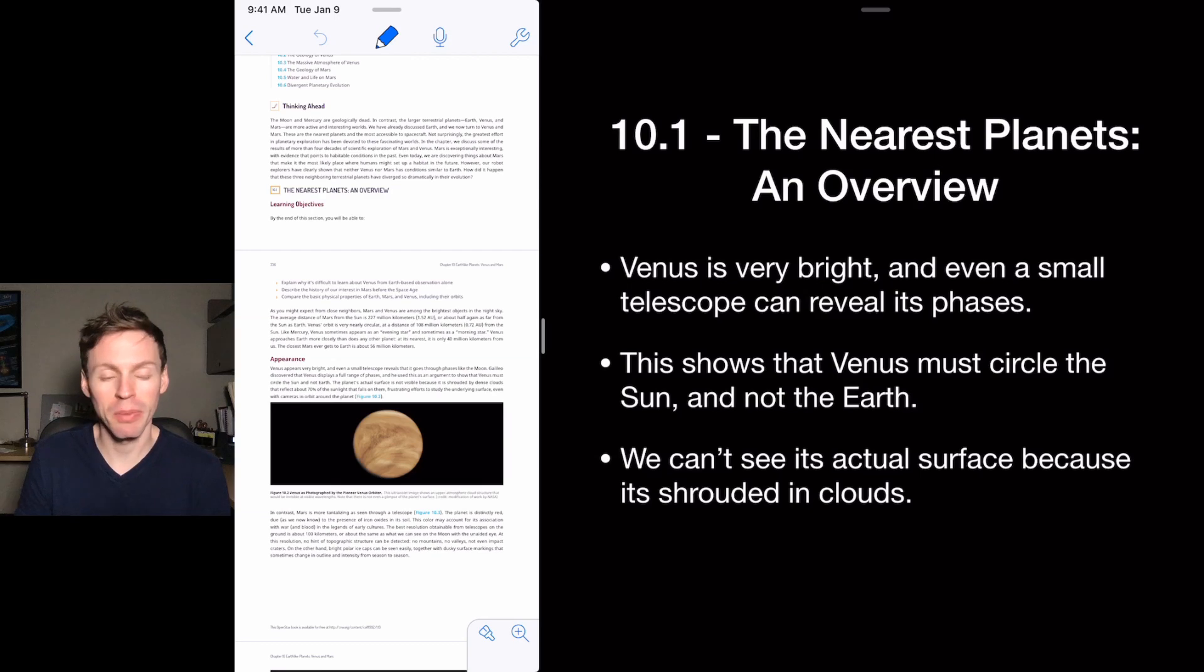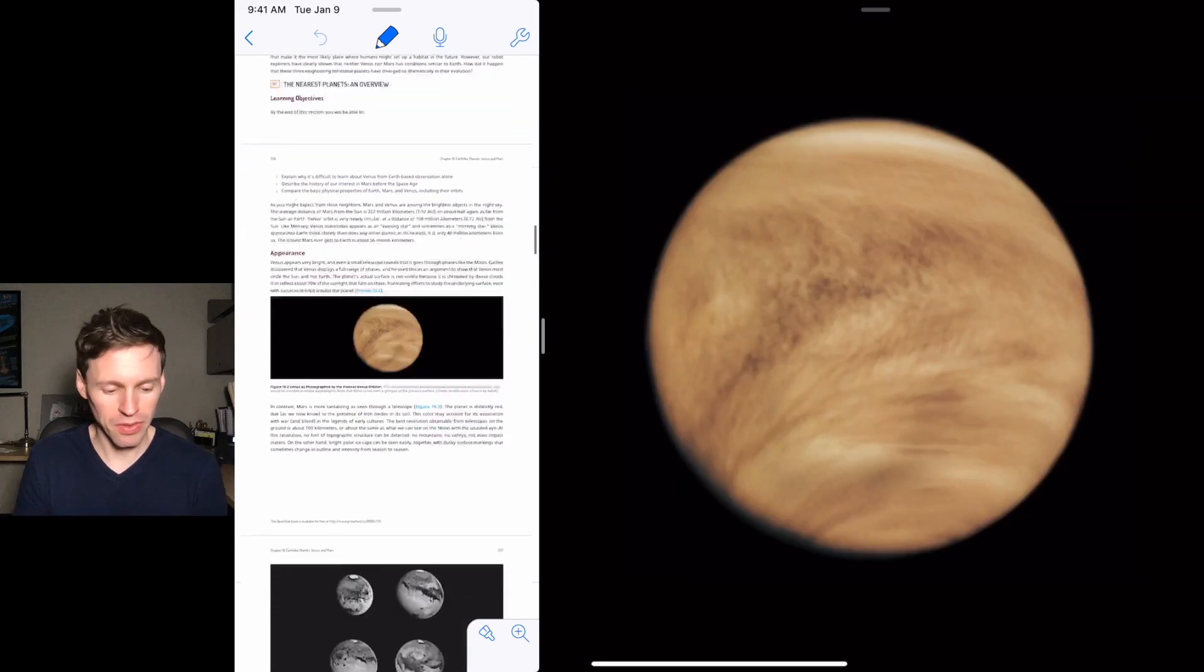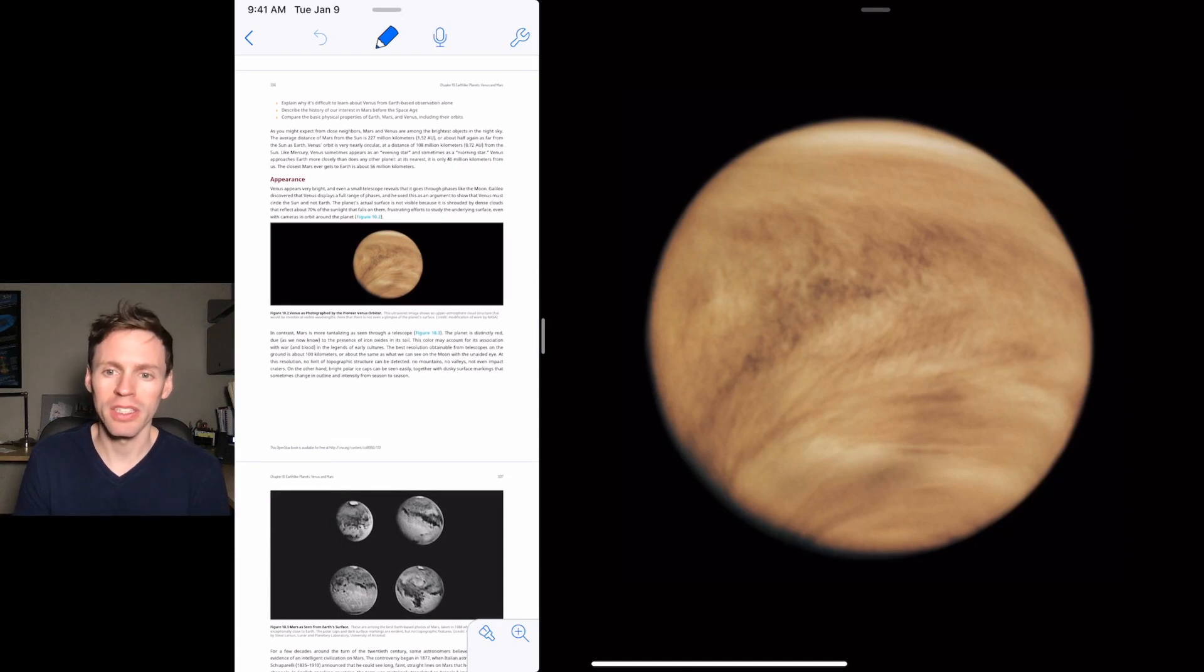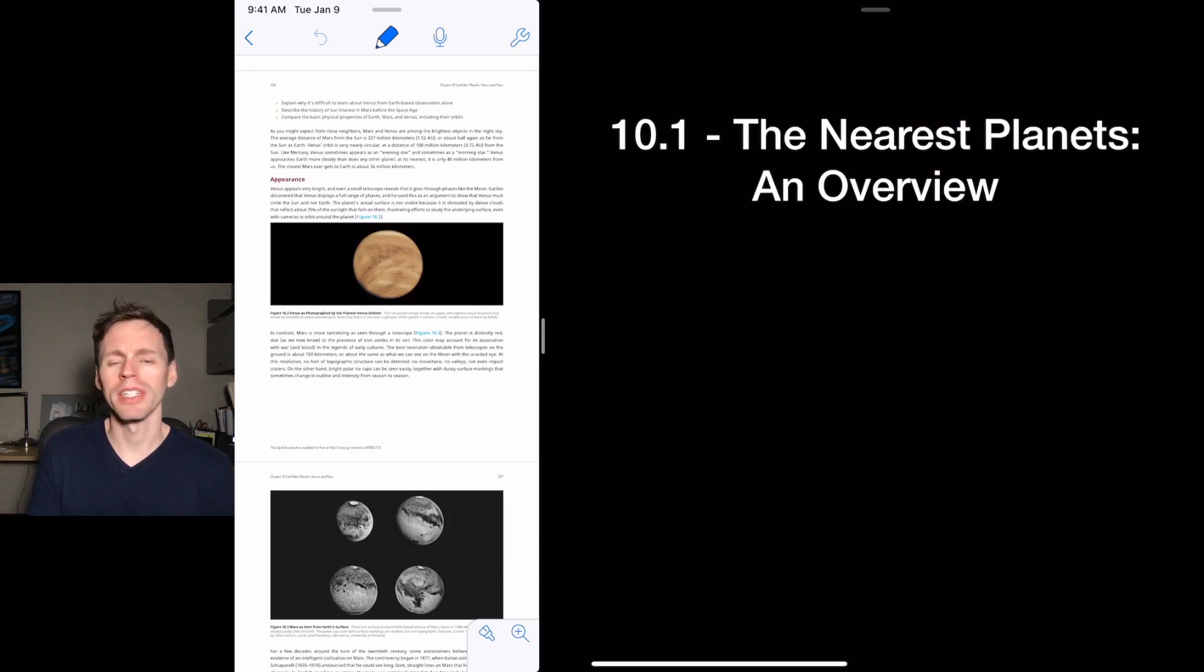We can't see the surface of Venus because it's covered in clouds. And so we've got this nice picture of Venus here. And you can see how difficult it is to see its surface because it's just a cloudy planet all the time. Imagine that, just cloudy, cloudy all the time.